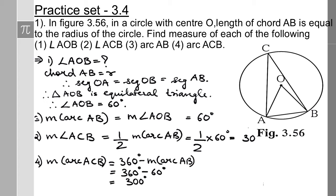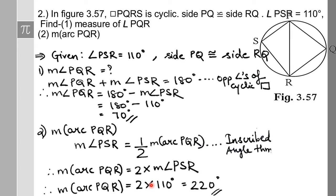This is the second question. In figure 3.57, quadrilateral PQRS is cyclic; side PQ is congruent to side RQ; angle PSR is 110 degrees. We need to find a few things. First sub-question: measure of angle PQR. Since the quadrilateral is cyclic, all vertices lie on a circle, and PQ is congruent to RQ, with angle PSR given as 110 degrees.